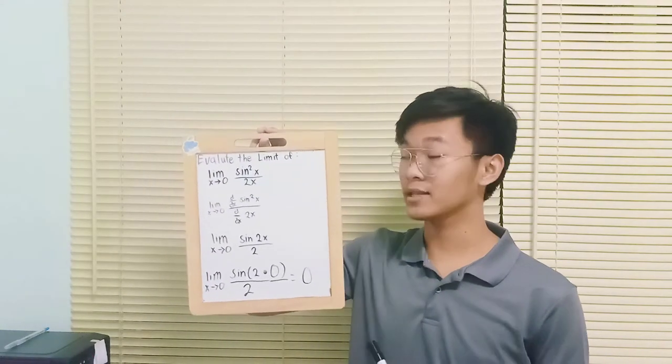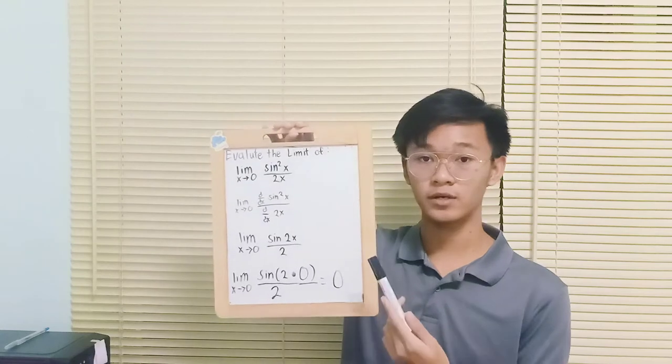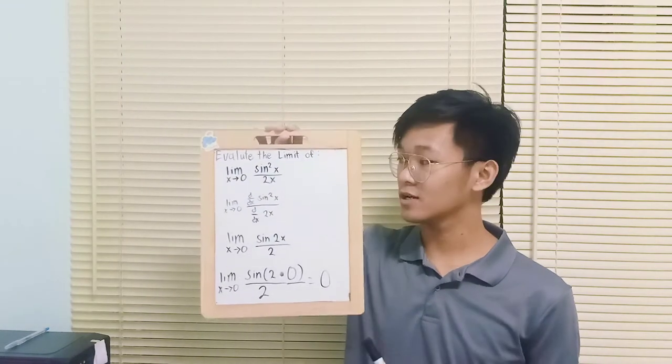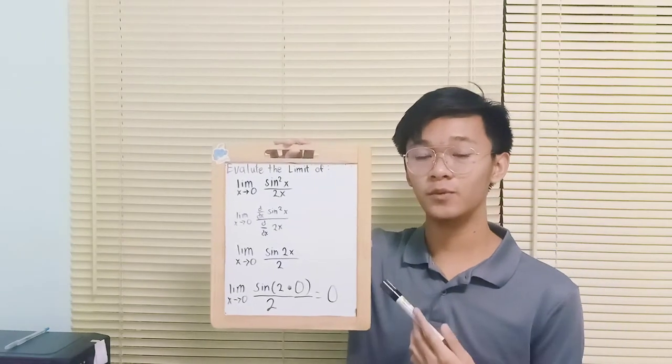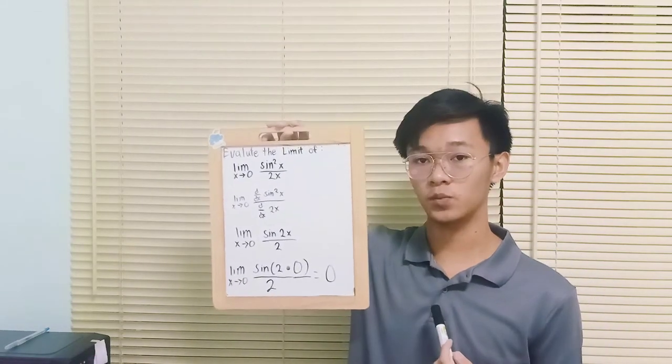So I am here today to evaluate this limit, sin squared x all over 2x as x approaches to zero. In evaluating this limit, I use the L'Hôpital's rule.